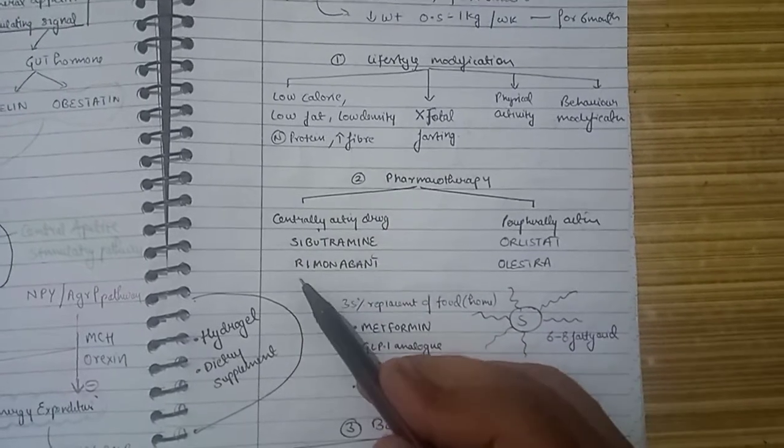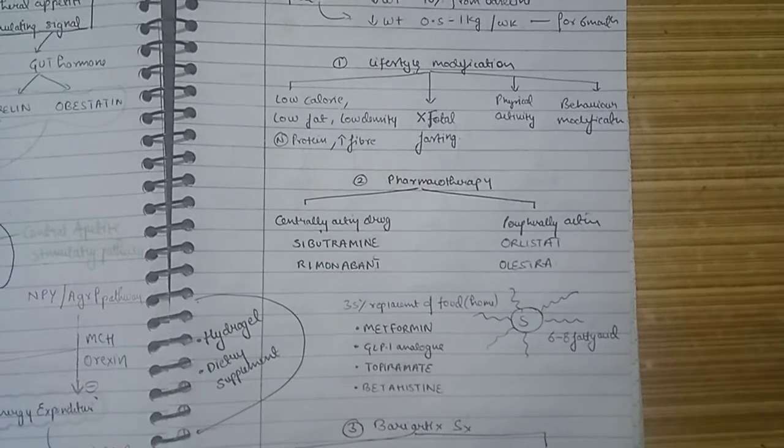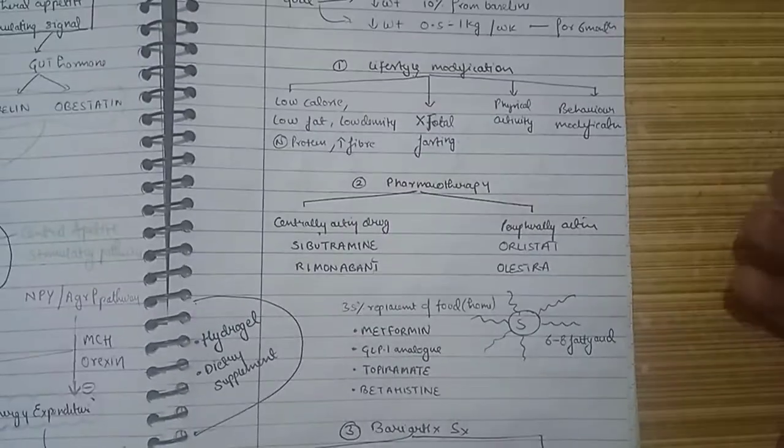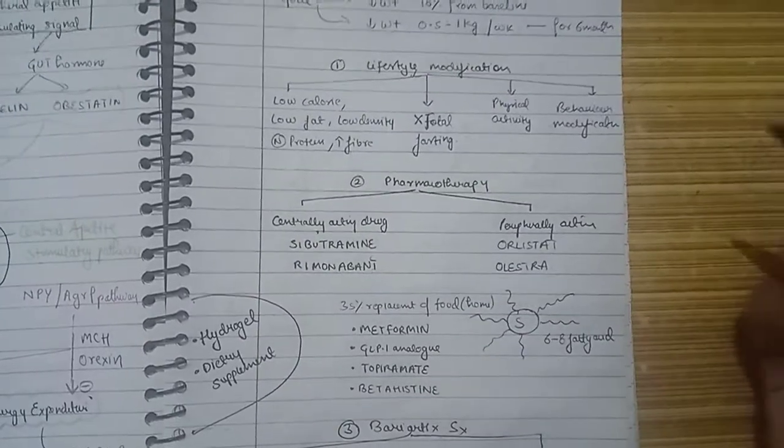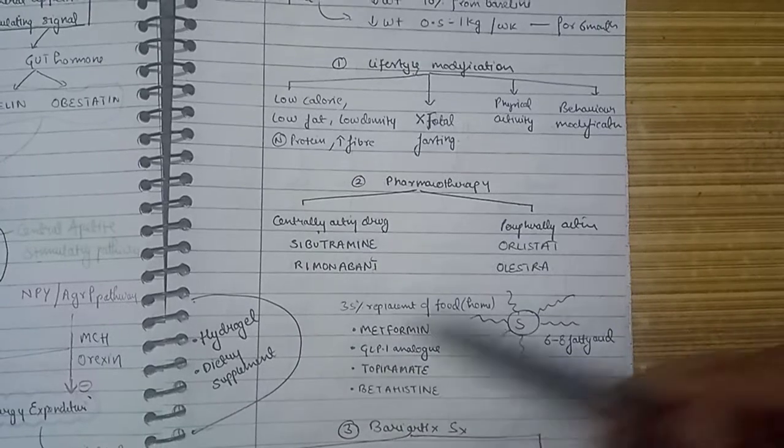Another drug banned by the US FDA is rimonabant, which is a cannabinoid receptor blocker in the periphery as well as centrally. Its central blockade increases depression and suicidal tendencies, so it is blocked.